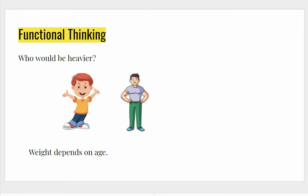Coming to functional thinking: look at this picture and I ask you to guess who would be heavier. Here is a child and here is a well-built adult man. You don't have to weigh them to tell me that the man is heavier than the child. So you'd say that weight depends on age — that's why the person who is younger is likely to be lighter. Not always true, but in this picture, that's the functional thinking you can use to guess.